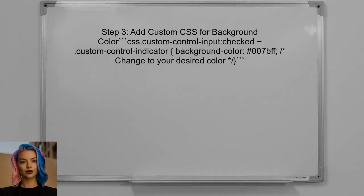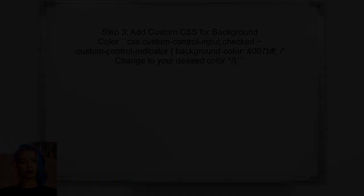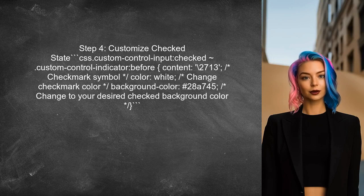To change the background color of the checkbox, you can add custom CSS. Target the custom-control-input class and set the background color as desired. Additionally, you can customize the appearance of the checkbox when it is checked by modifying the custom-control-indicator class.